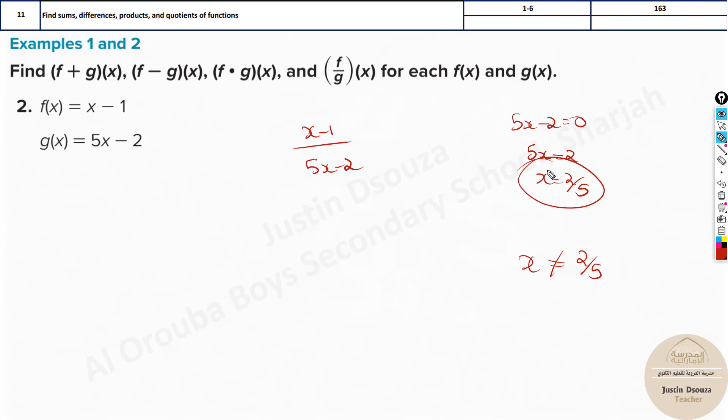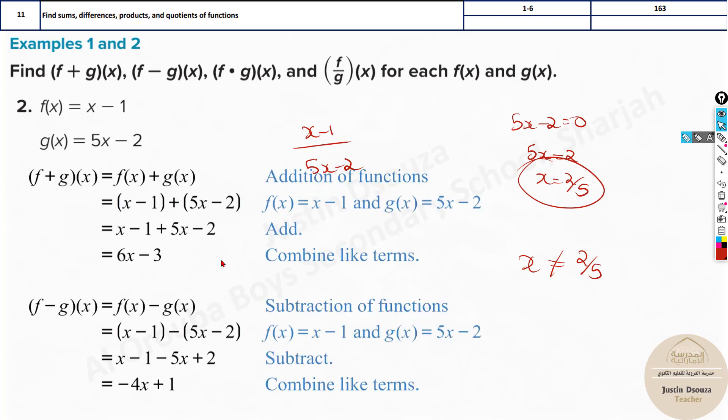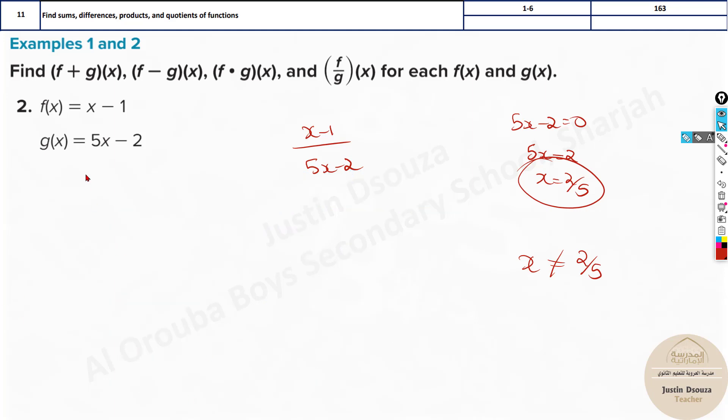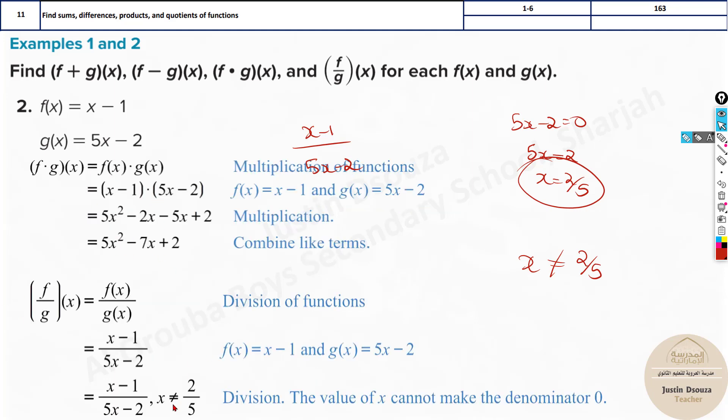And then I'm telling the value of x when it's equal to 2 by 5 cannot be possible over here in the denominator. See over here this adding is very straightforward and subtracting. We can multiply as well. And then look here it is x minus 1 divided by 5x minus 2. But x does not be equal to 2 by 5.